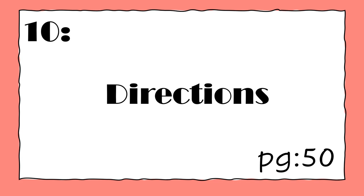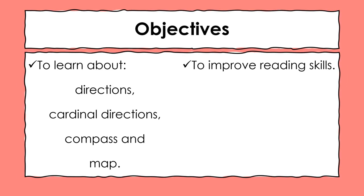Before moving forward, let's quickly have a look at the objectives for today's class. We have two main objectives. The first one is to learn about directions, cardinal directions, compass, and map. The second objective is to improve reading skills. I hope that in today's class we will be able to attain these objectives.